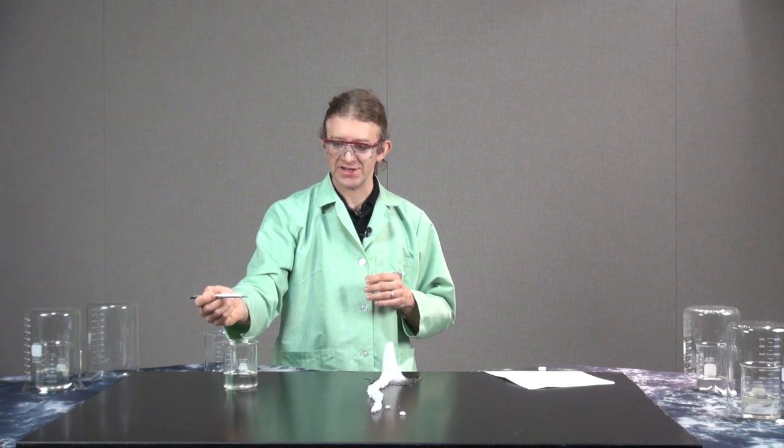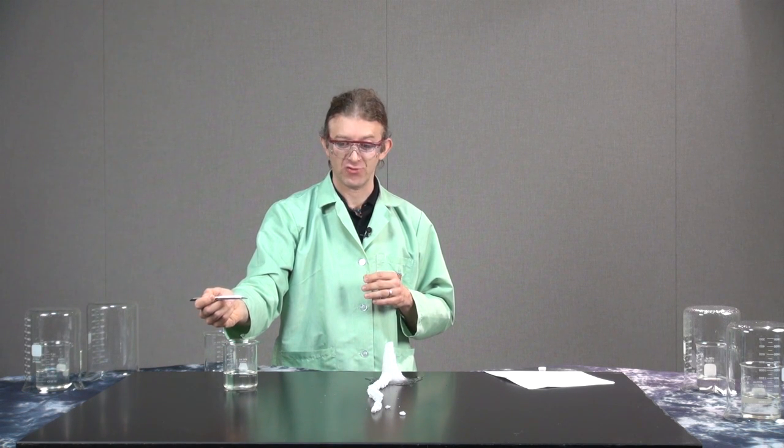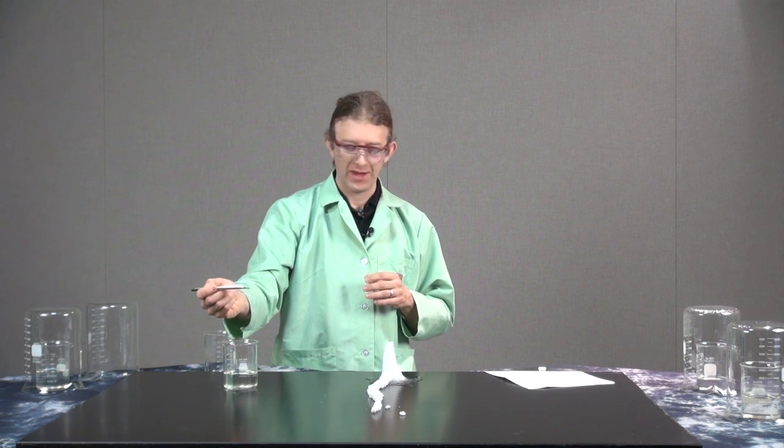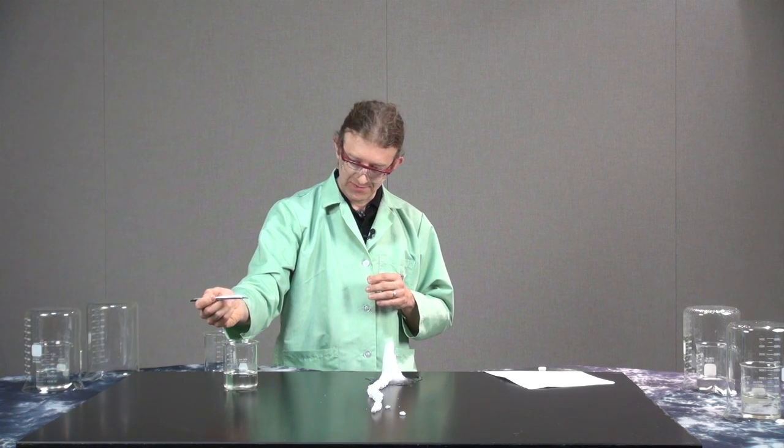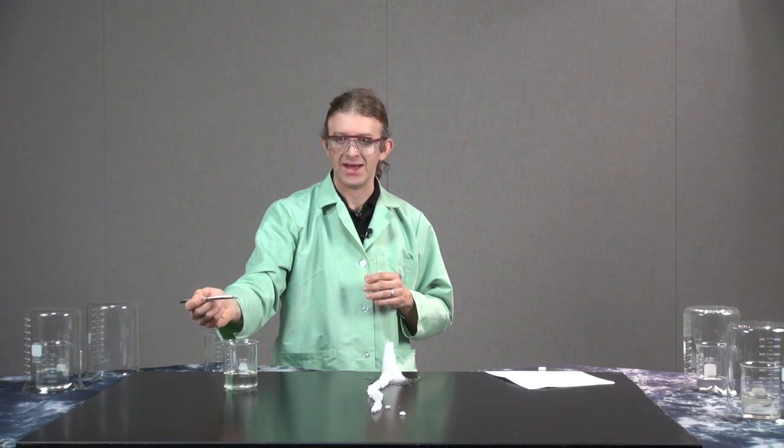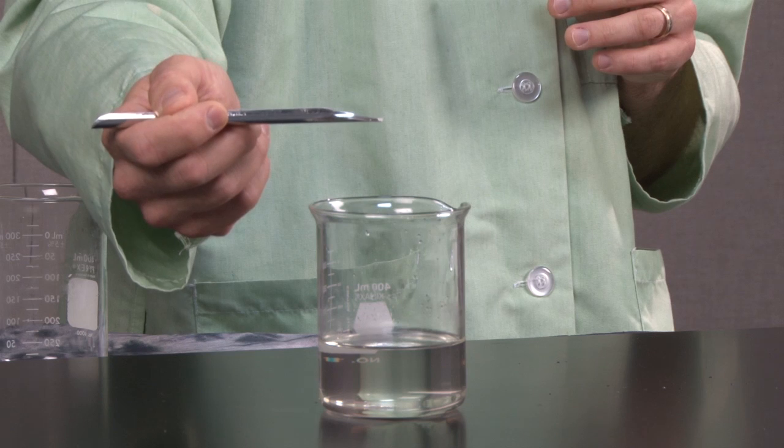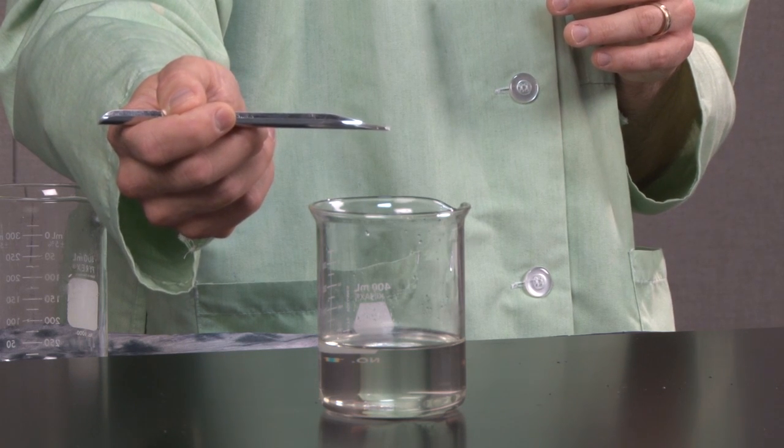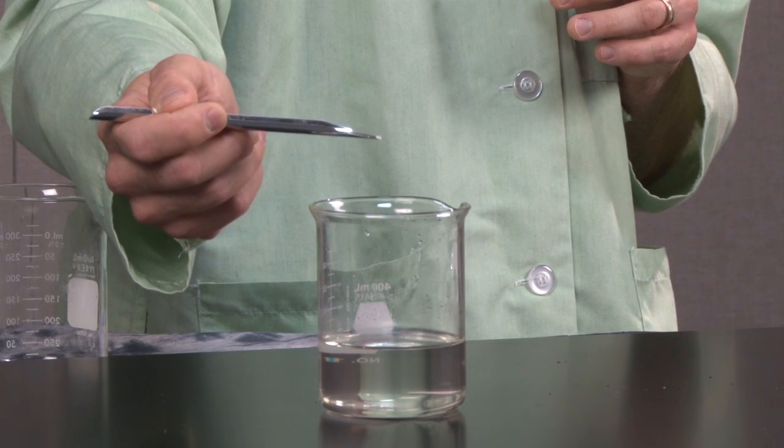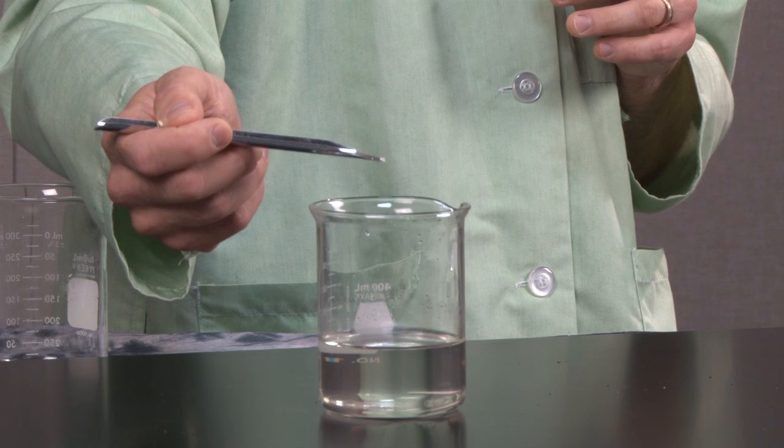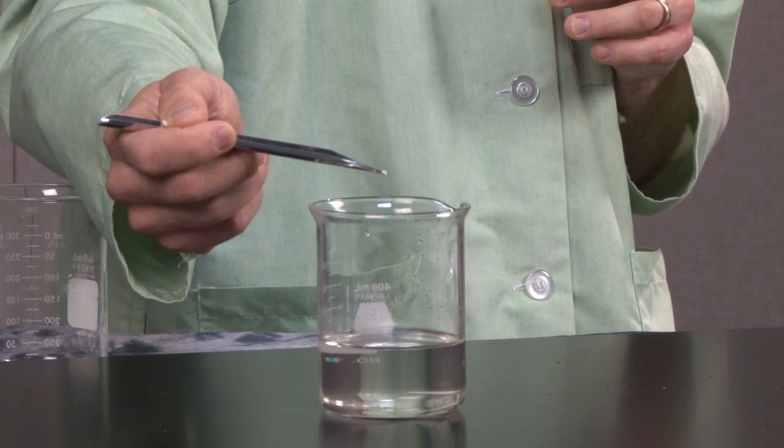So we just saw a demonstration where we made a sodium acetate trihydrate column. And we're going to try to crystallize this next supersaturated solution by dropping a seed crystal in. So I have a seed crystal on the end of my spatula here. I'm going to drop it in and hopefully it will start the crystallization process. Here we go.